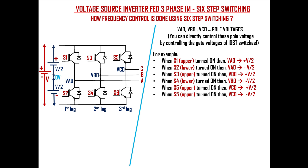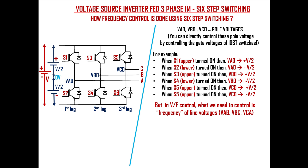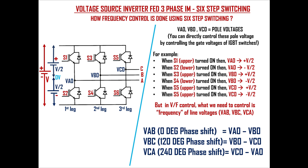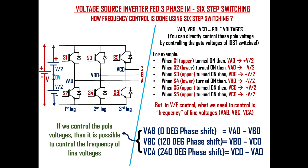Similarly for the second leg and third leg transistors. But what we need to control is the frequency of line voltages VaB, Vbc, and Vca. We can write VaB as Va0 minus Vb0, Vbc as Vb0 minus Vc0, and Vca as Vc0 minus Va0. We need to keep in mind that the three line voltages should have 120-degree phase shift. So if we control the pole voltages by controlling the gate voltages of IGBT switches, then it is possible to control the frequency of line voltages.